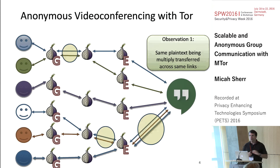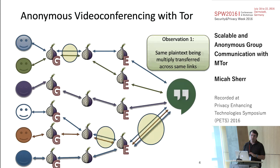We started by looking at this contrived picture and making some observations. The first observation is that the same plaintext — the same video conferencing information — is being relayed multiple times, potentially over the same links. So there's some perhaps unnecessary redundancy there.